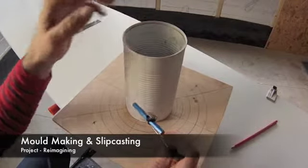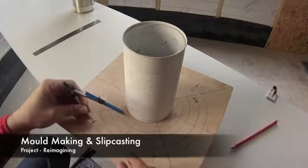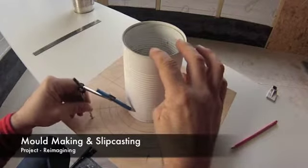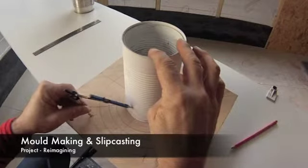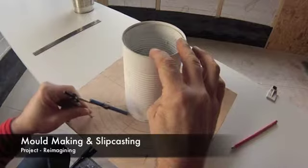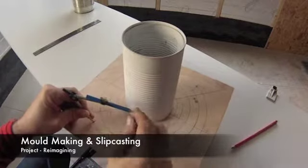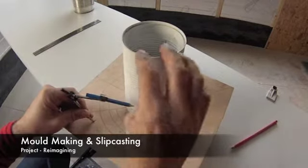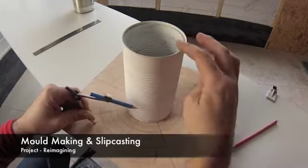The first stage of this process is working out the most efficient and effective way to divide your object, or what we call positive, into its constituent parts to make the mould. One of the key issues about mould making is avoiding undercuts. This important fact will be covered in much more depth later.